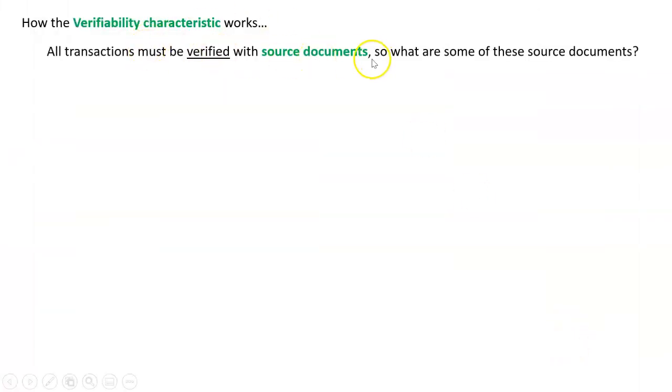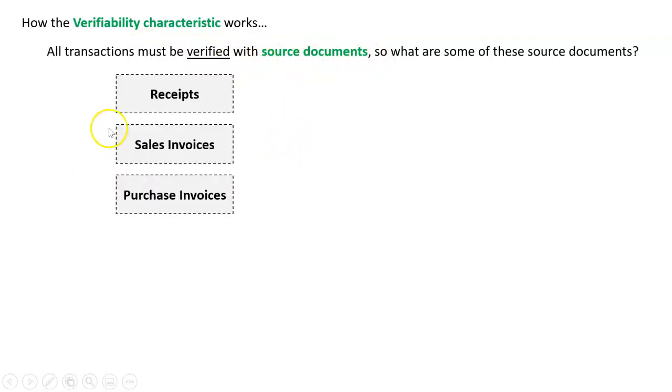What else do we know? Well, source documents. What are the types of source documents? We'll get through those as we go through the course. But for now, we'll just say, look, some of the ones we're going to expect to see are called receipts, sales invoices, purchase invoices.